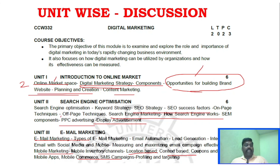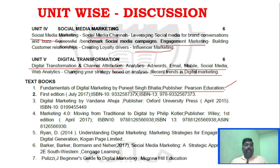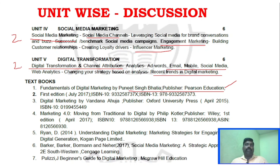In unit 2, look at two-point areas for two-mark questions. Unit 3 covers email automation and lead generation for short questions. Unit 4 similarly has two-point areas. Unit 5 also has two-mark questions — you can find almost eight to nine questions across all units for the two-mark section.